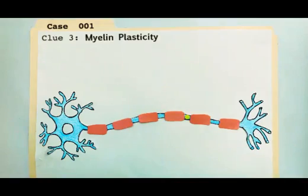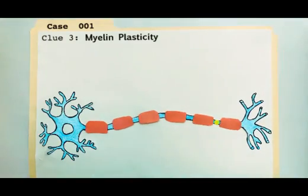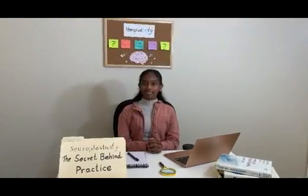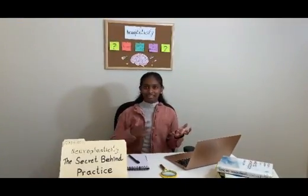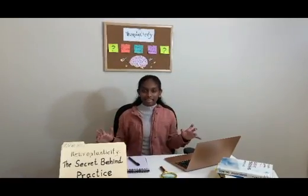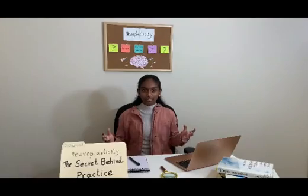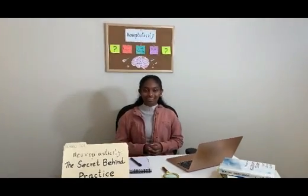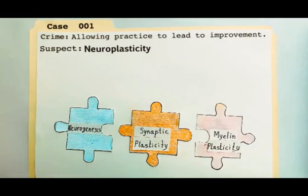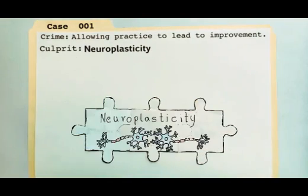The more myelin, the faster this process, called saltatory conduction, occurs. Hence, neuroplasticity means that while your brain does control your actions and decisions, the efforts and choices you make every day can have the power to eventually change your brain. Ultimately, neurogenesis, synaptic plasticity, and myelin plasticity are parts of neuroplasticity.